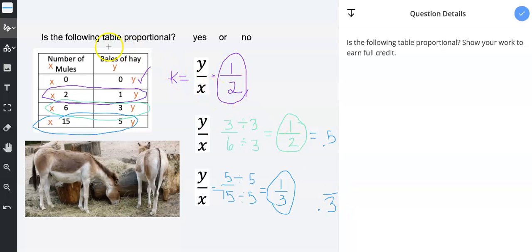Since these unit rates are different, is the table proportional? No, it is not proportional. A proportional table has the same unit rate throughout the entire table. And this table does not have the same unit rate throughout, so it's not proportional.